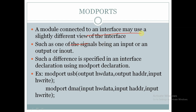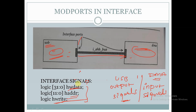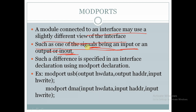A module connected to the interface may use a slightly different view of the interface — such as one signal being an input or an output. That is, HW_data can be output for USB but input for DMA, and H_write can be input for USB but output for DMA. Such a difference is specified in an interface declaration using the modport declaration. We declare the modport to differentiate the signals as output or input.